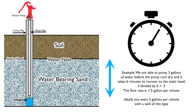Here's an example of how we can figure that out. Let's say we pump three gallons of water out of our well before it begins to fail, and it takes six minutes to recover to the level we began. Three gallons divided by six minutes gives us 0.5, so the flow rate is one half a gallon per minute. Now ideally, you would want three gallons per minute with a well of this type — more is better.